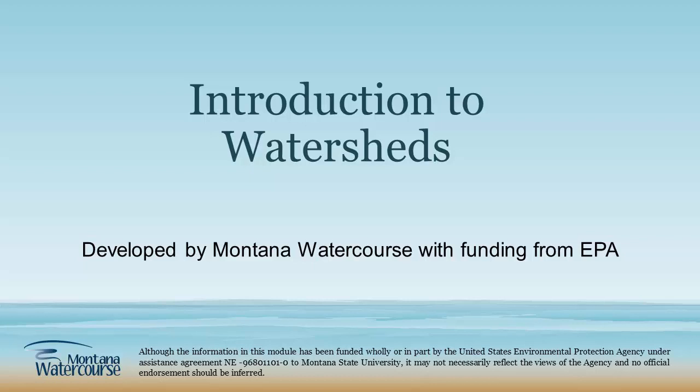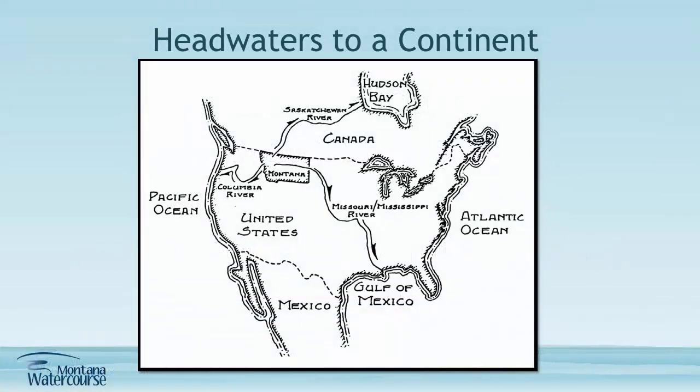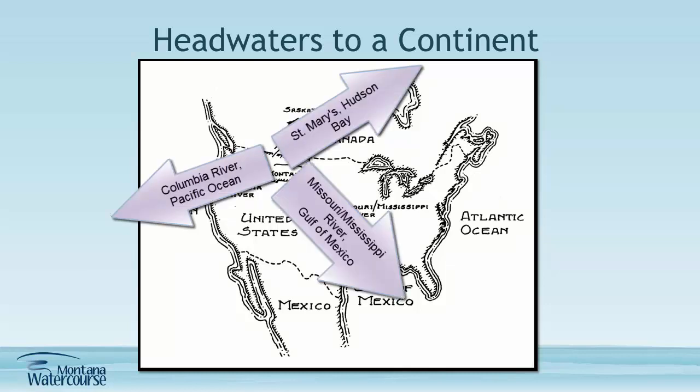Montana is a headwater state. That is, three major watersheds start in Montana. Any snow or rain that falls in Montana that is not consumed or evaporated will eventually flow all the way to the Pacific Ocean, Hudson Bay, or the Gulf of Mexico. As a headwater state, how we manage our water has wide-reaching consequences on many downstream users.